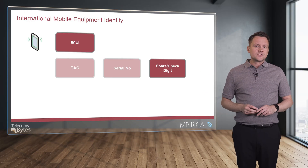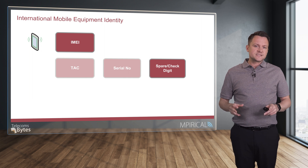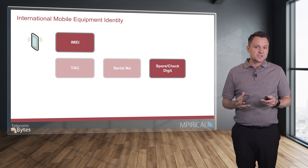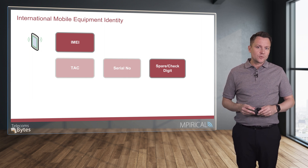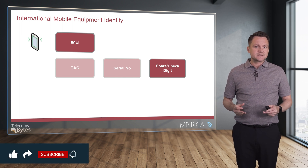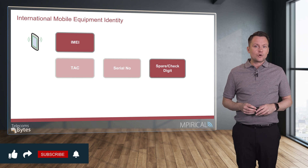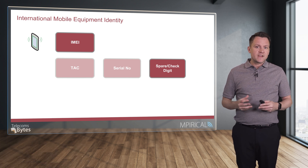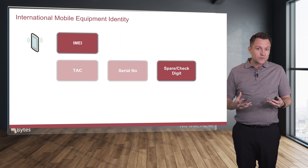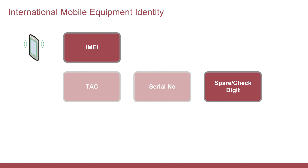Finally, the spare or check digit. Prior to 2003, this digit was simply used as a spare and had no particular purpose. Subsequent to that, it is now used as a check digit and uses the Luhn algorithm to ensure that the IMEI number itself is valid. This is particularly useful for data input, validating the IMEI number when entering it to ensure it has been entered correctly.